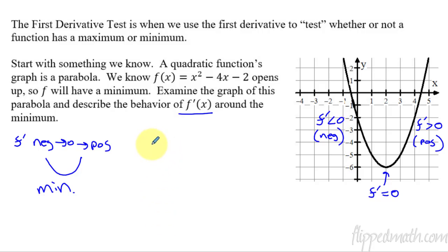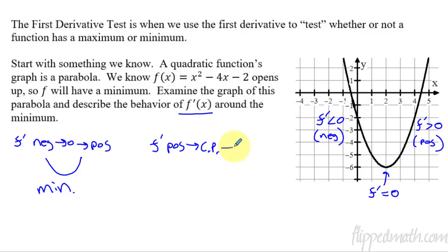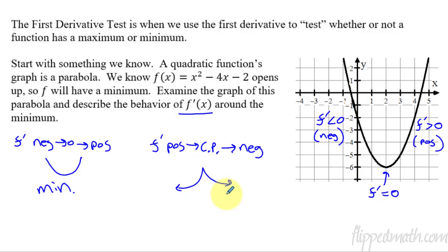Now let's do what if it was a maximum. If I had f prime, your slope would be positive, and then it's going to change. Instead of saying zero, I'm just going to say that you have what's called a critical point, which we've practiced over and over again. The critical point is where the derivative is either zero or does not exist. So it goes from positive to your critical point, and then the slope becomes negative. So this could be an example of something like a cusp — maybe the critical point is not where the slope is zero, but where the derivative does not exist. So that would be a maximum.